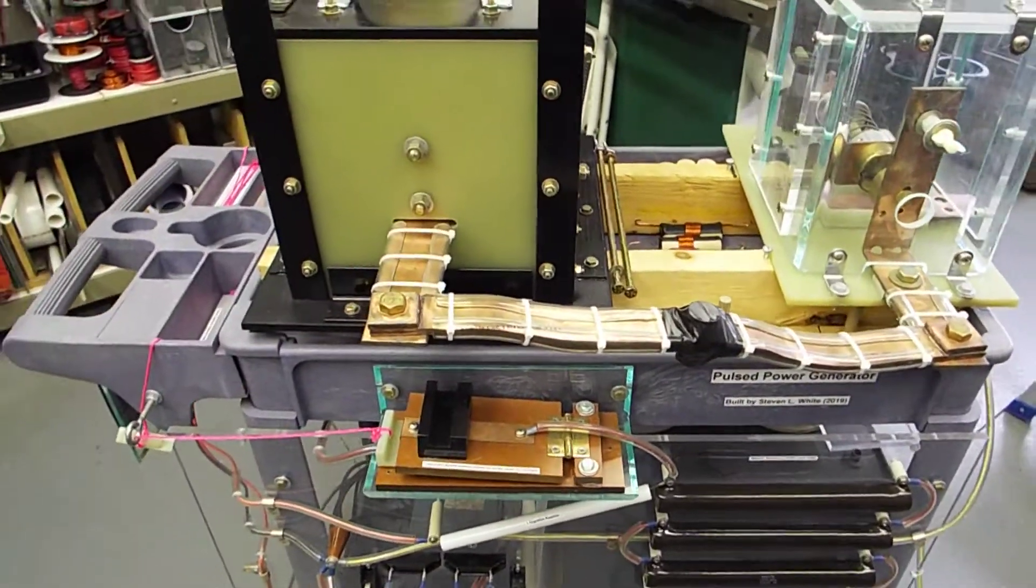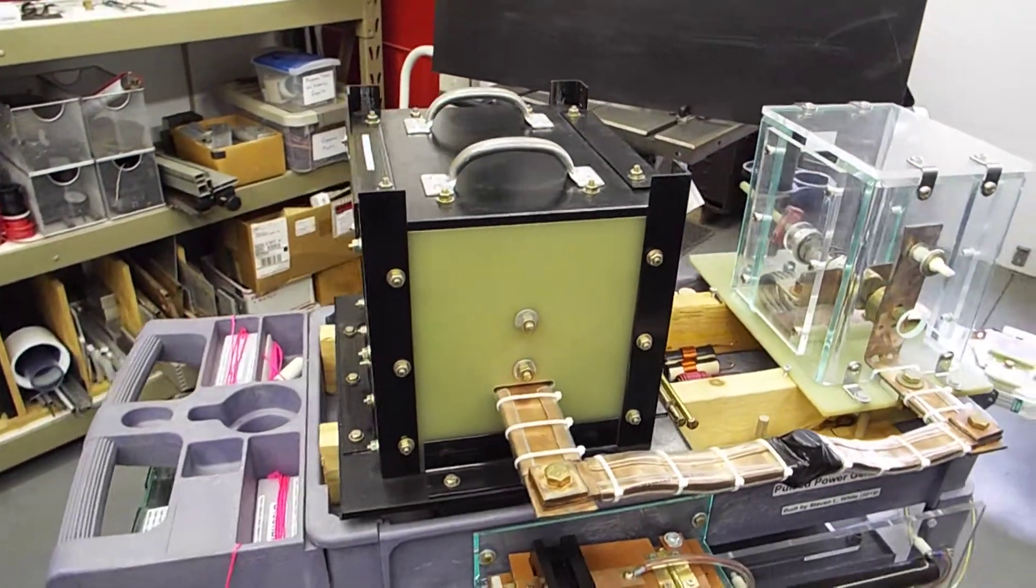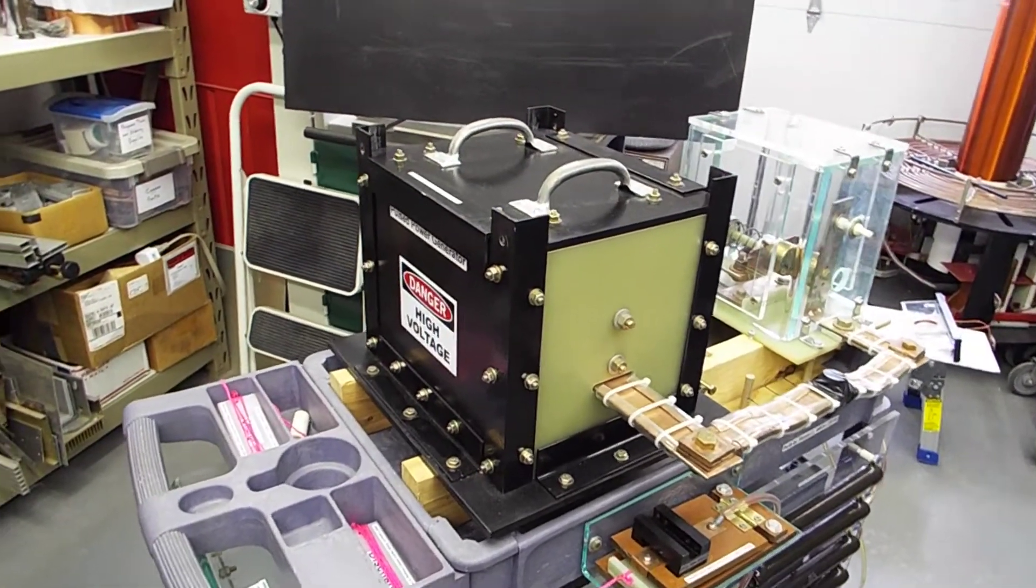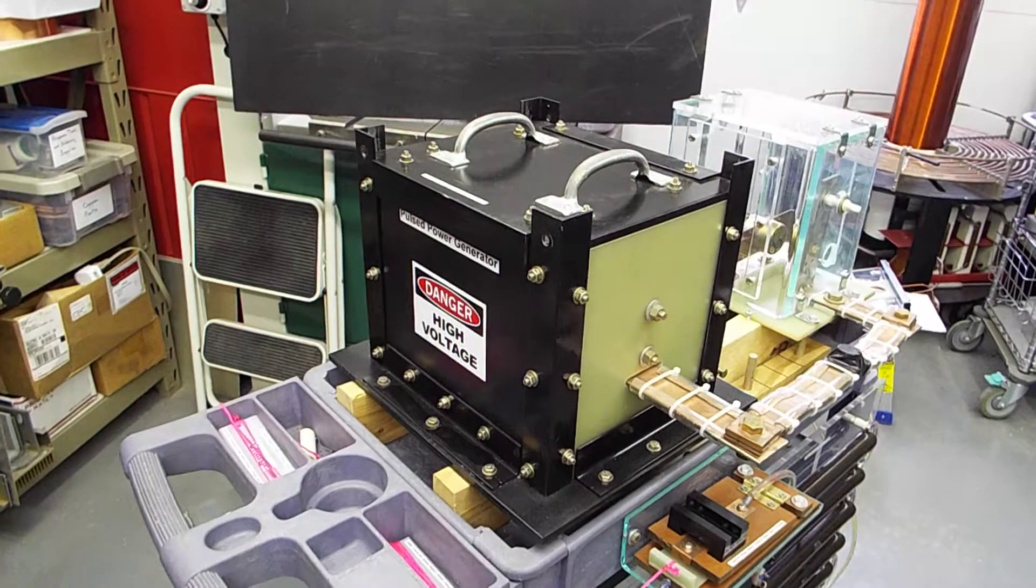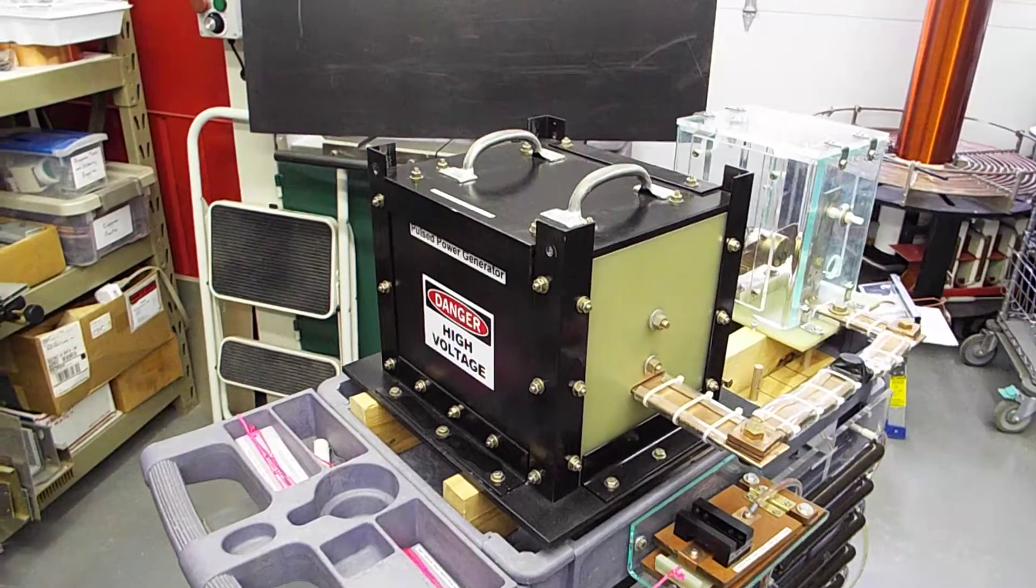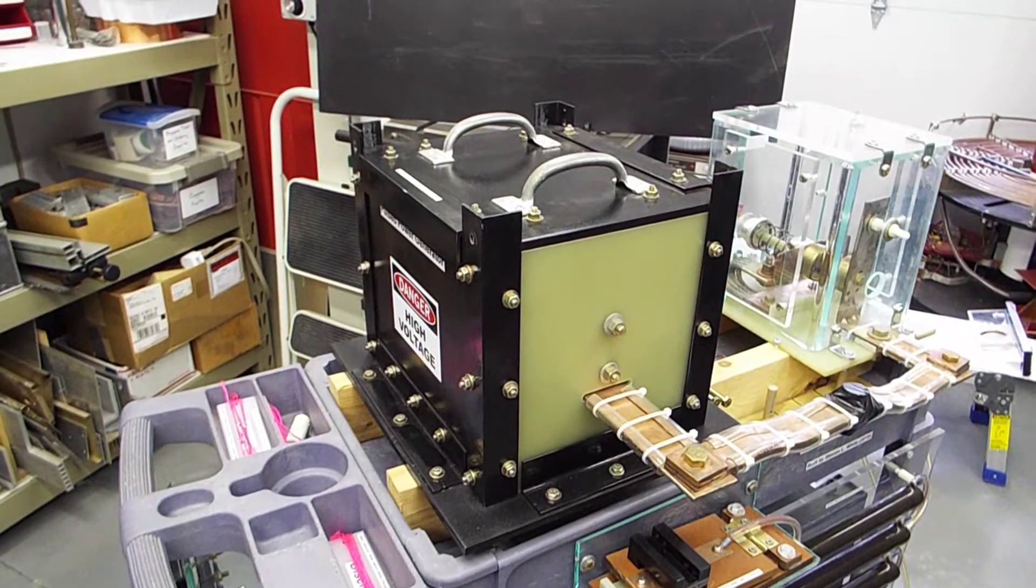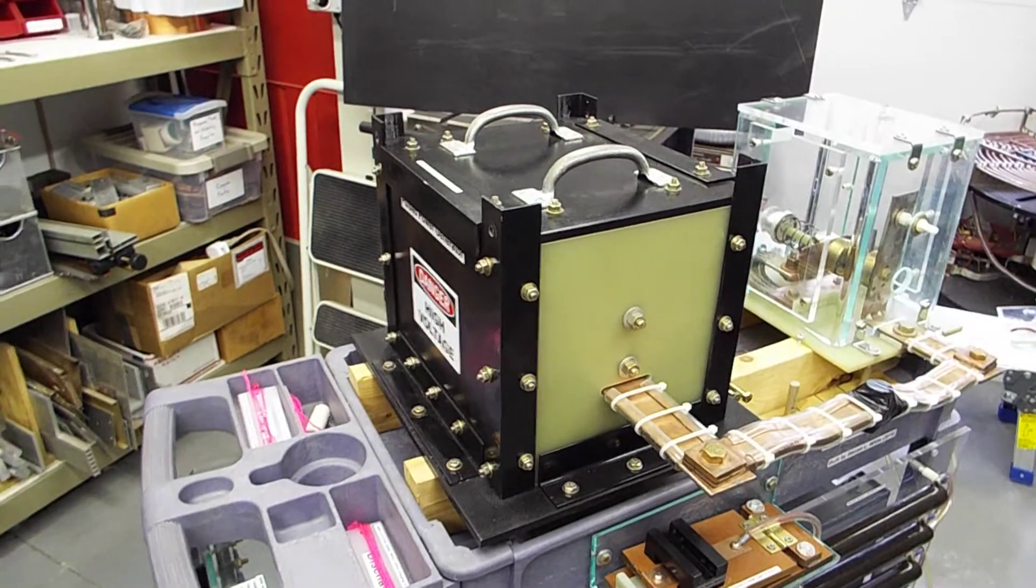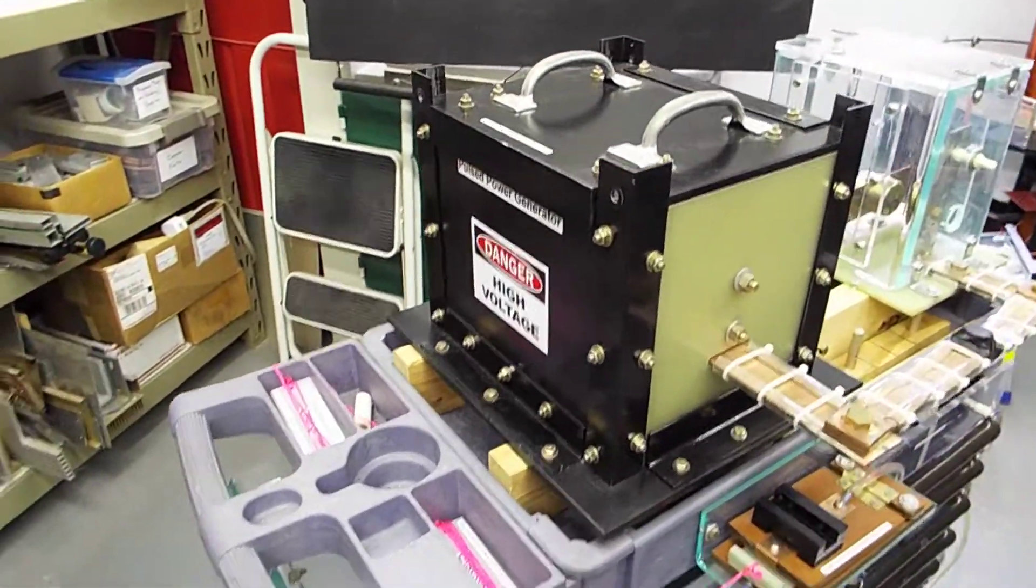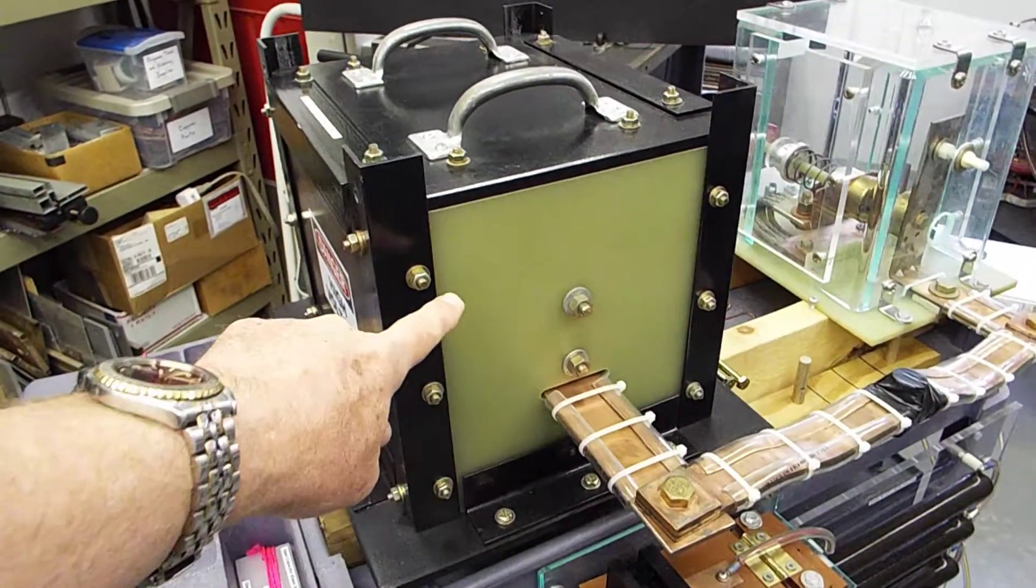And then that all feeds into this blast cage, which is this black and green box on the top. The black parts are made out of 3 1/8-inch sheet steel. And the green parts are G10 fiberglass and HDPE. Those end pieces have to be an insulator because, as you can see, the electrodes run inside of there.